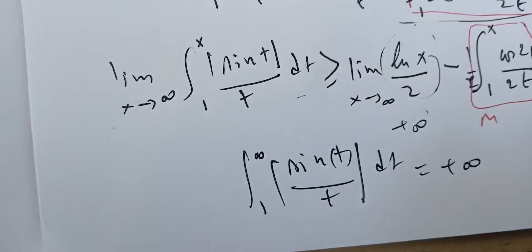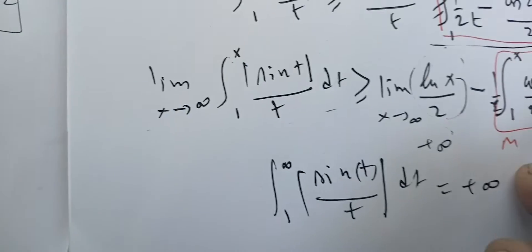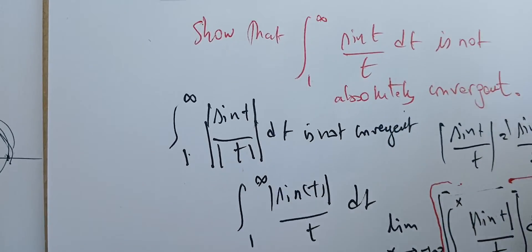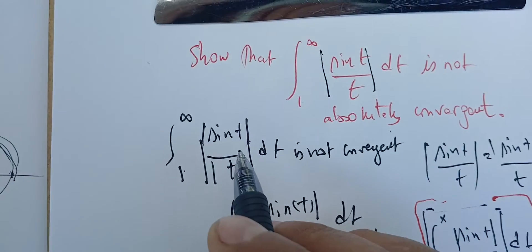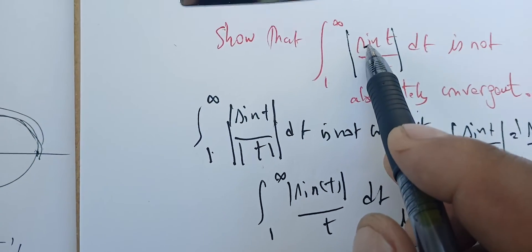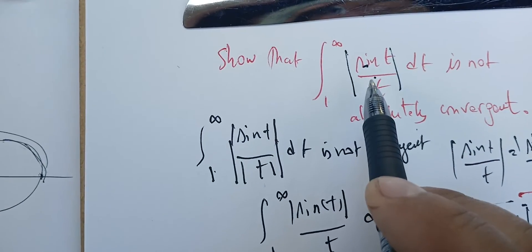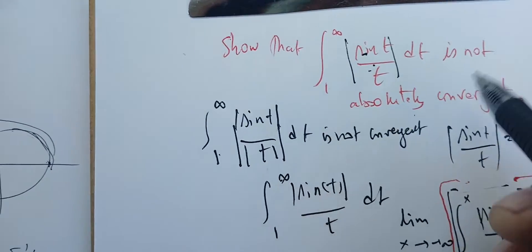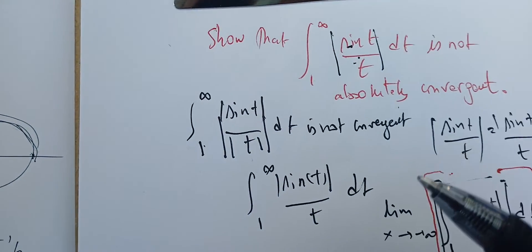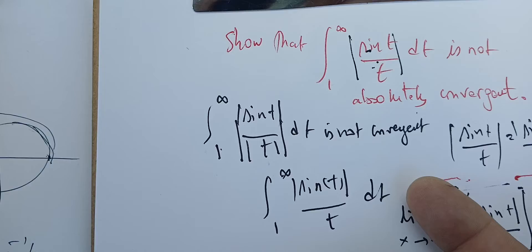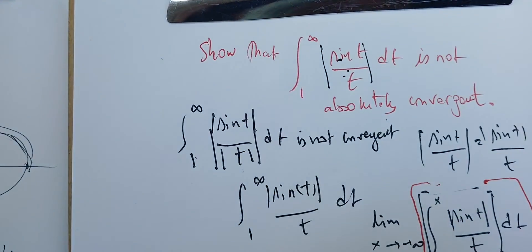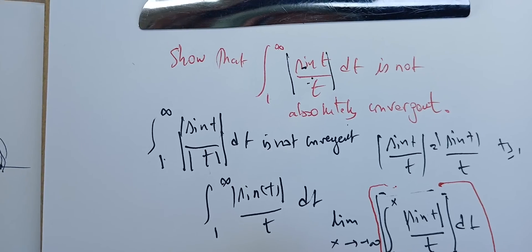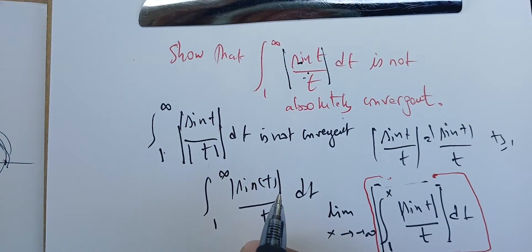Therefore the integral from 1 to infinity of |sin(t)|/t is infinite, and hence not absolutely convergent. This shows that regular convergence does not imply absolute convergence. Absolute convergence implies convergence, but not the other way around — absolute convergence is strictly stronger than regular convergence, and this integral is a concrete example of that distinction.